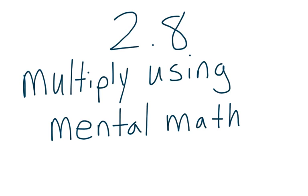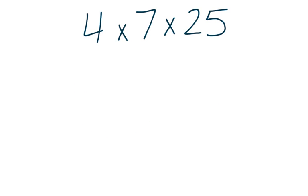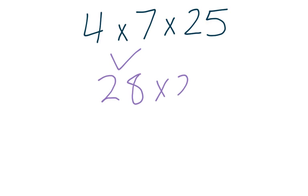Let's take a look at one. Here we see a problem that has three numbers that we're multiplying together: 4 times 7 times 25. At first glance, this might be a pretty daunting task. Three numbers multiplying together can be quite challenging, especially if we break it up the wrong way. If we were to multiply 4 times 7 first, we'd end up with 28 times 25, and that's really big math. I'm not ready to do all that math.